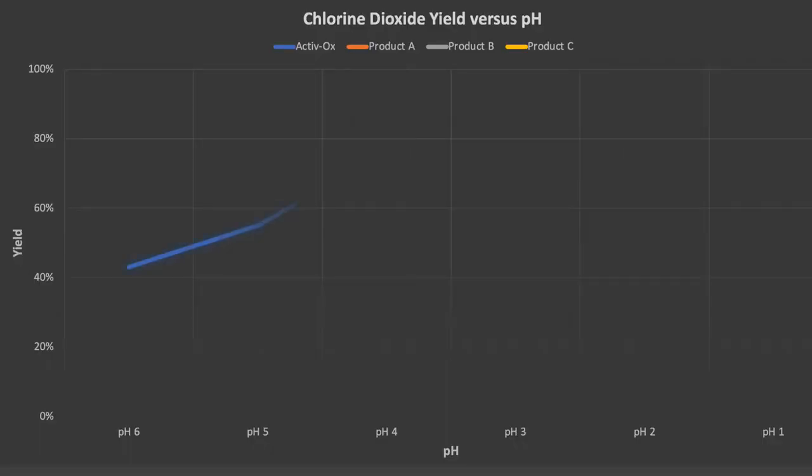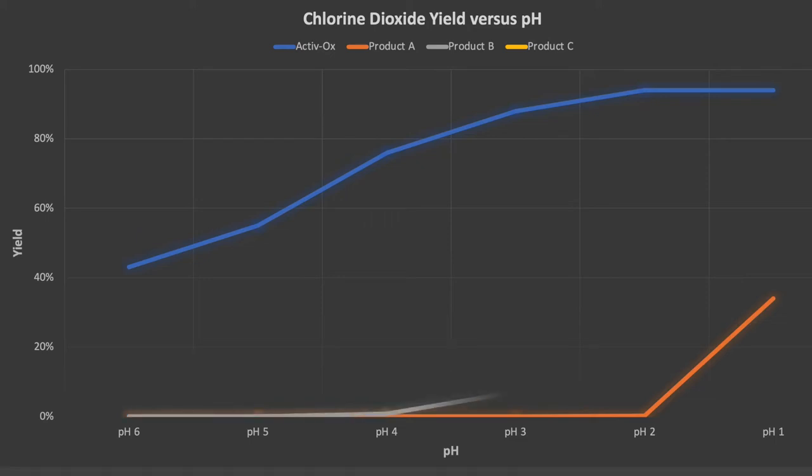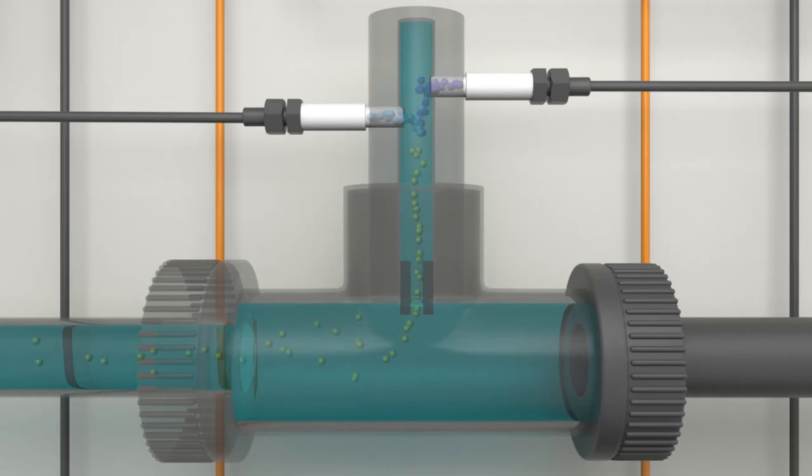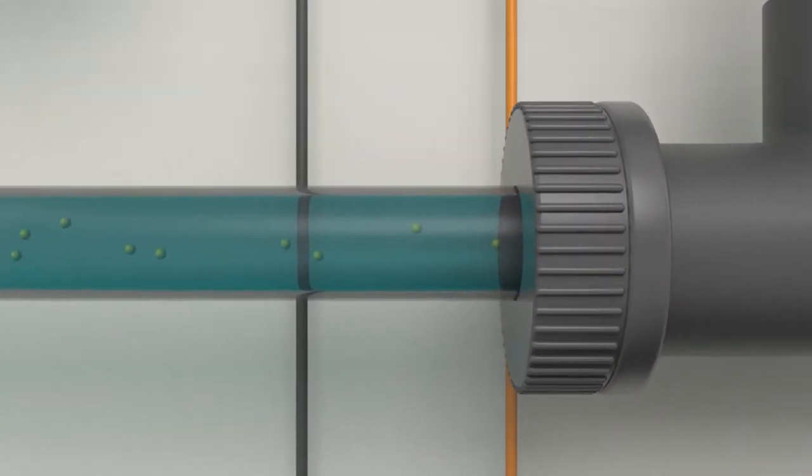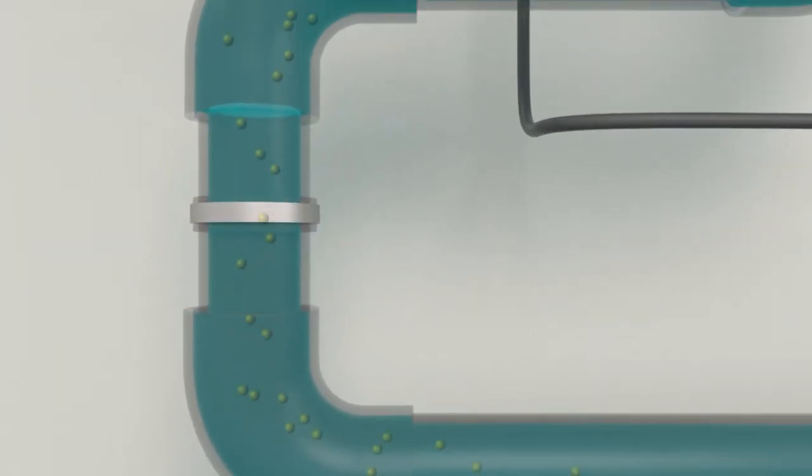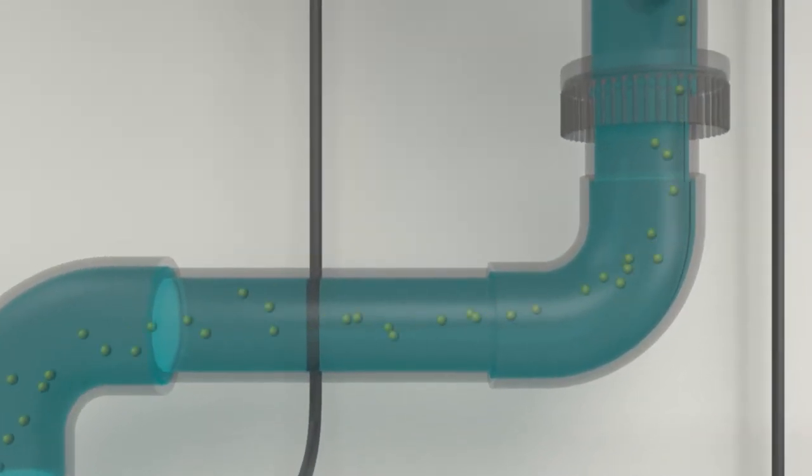Another important difference between Activox and competitor products is that it doesn't require strong acids. This diagram shows that competitor products A, B, and C all require highly acidic conditions to release their chlorine dioxide, which means they need dangerous strong acids. Activox, by contrast, starts to release chlorine dioxide the moment the pH is pushed below neutral and can be activated fully using a mild acid or even your favourite lemonade.